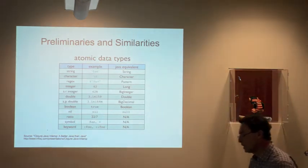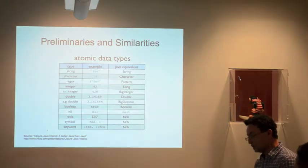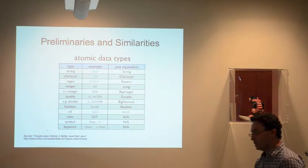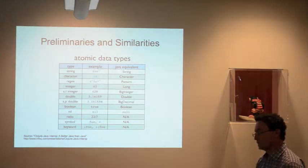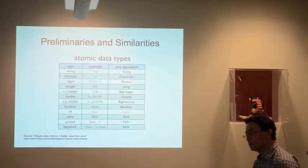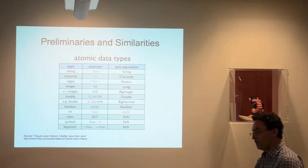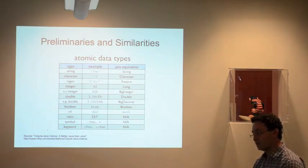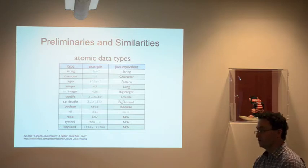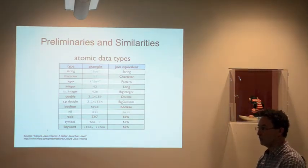This slide is taken from a Stuart Halloway presentation called 'A Better Java Than Java.' It compares data types you see in Clojure versus Java. A string is just a word in double quotes. A character is a slash and then the character. Regular expressions are natively supported — just a pound sign and then something in double quotes. As they say, if you need regular expressions, you start using them and now you have two problems.